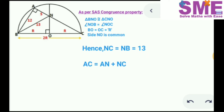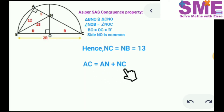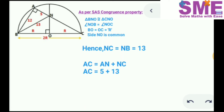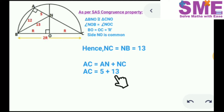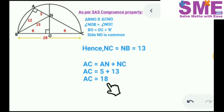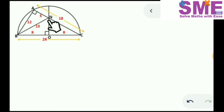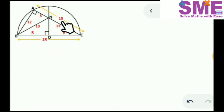The full length AC equals AN + NC. So AC = 5 + 13 = 18. The length of NC is 13 and the length of AC is 18.